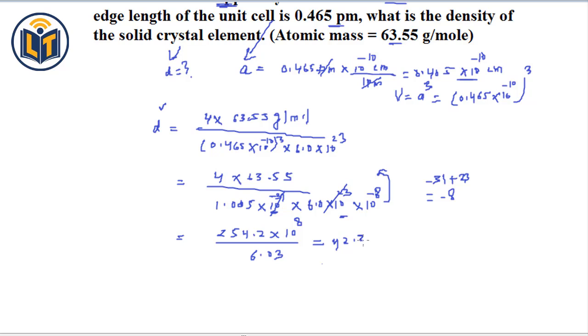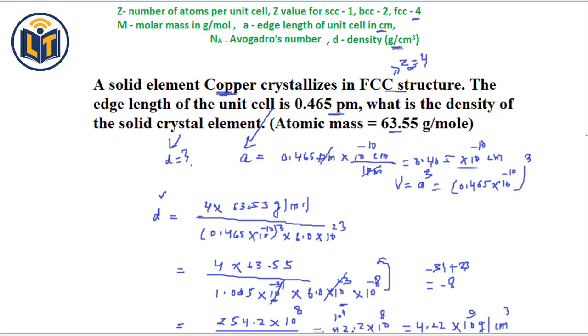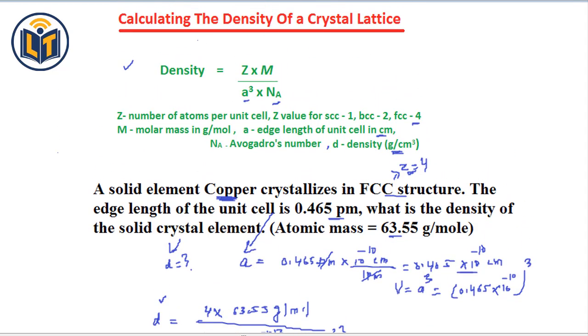Here, we have 42.2 multiplied by 10 to power 8. We can move this decimal on left side. As a result, here, we get 10 to power 1. Here, we have 4.22 multiplied by 8 plus 1 is equal to 9, 10 to power 9. And the unit of density is in grams per centimeter cubed. You can see how we have been able to calculate the density of crystal copper element by using the density formula.